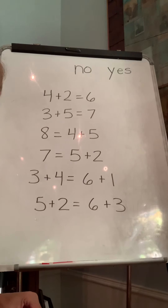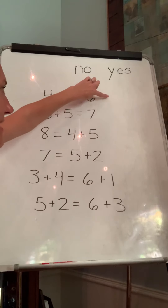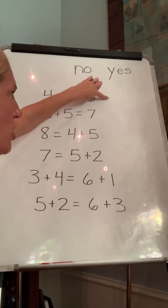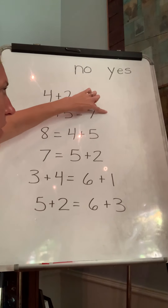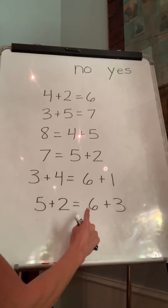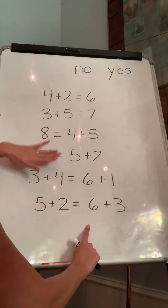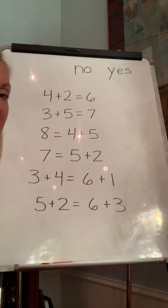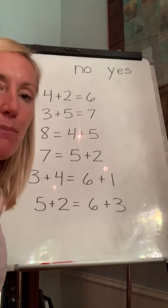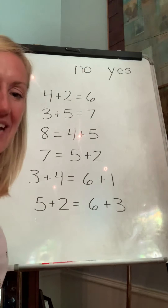So write those on your whiteboard. Figure out if they are correct and put no or yes next to each of those. Remember you can stop your video right now, write all these down, and then put them up on Seesaw for me. Let's see how we do. Bye.